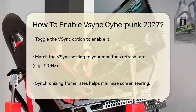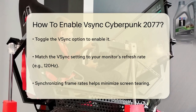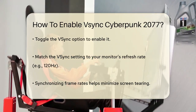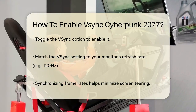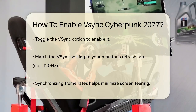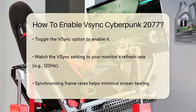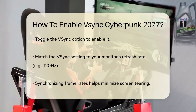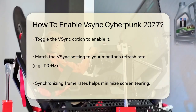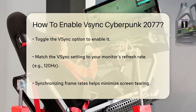To enable VSync, simply toggle it on. The next step is crucial. You need to match the VSync setting to your monitor's frame rate. For example, if your monitor is running at 120Hz, set the VSync to 120Hz as well. This helps ensure that the game's frame rate is synchronized with your monitor's refresh rate, reducing screen tearing significantly.